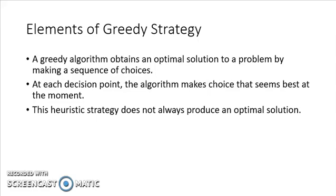The elements of greedy strategy are shown in the slide. A greedy algorithm obtains an optimal solution to a problem by making a sequence of choices. At each point, the algorithm chooses the option it thinks is the best — it chooses the local optimum at every point. But we know that this does not always provide an optimal solution; we have seen multiple examples of failure of a greedy choice in previous lectures.